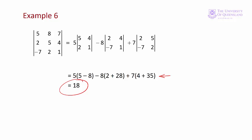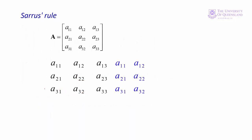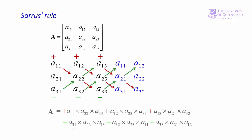Another method for finding the determinant of a 3x3 matrix was developed by Pierre Sarrus in the first half of the 19th century — this is Sarrus' rule, a mnemonic rule. We start with our 3x3 array, then repeat the first and second columns. Starting at the top left, we create three products along the downward diagonals and give each a plus sign. Then from the bottom left, we create three products along the upward diagonals and give these minus signs. We now have six terms — three positive and three negative — which correspond precisely to those found when expanding along the top row.